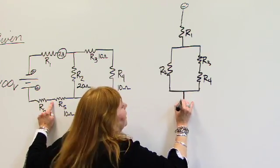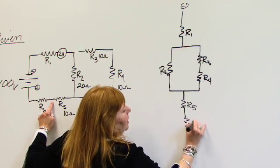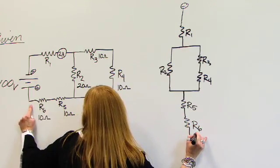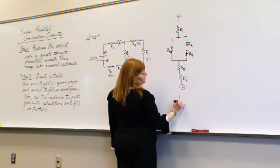And that current will flow through R5 and then R6. And then we'll go back to source. And so this is our first redraw.